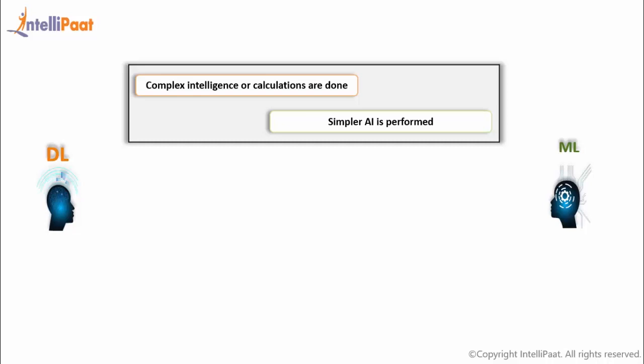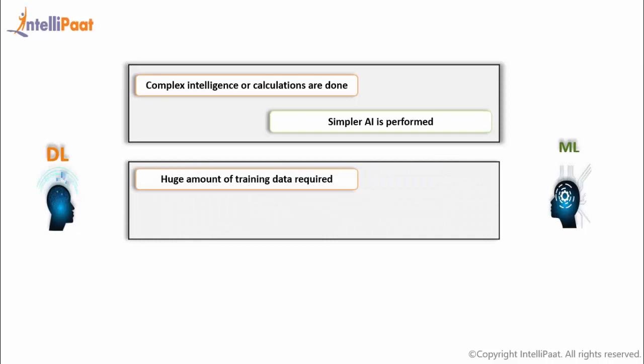Number two: the amount of data. Deep learning requires a huge amount of training data—really huge—to perform calculations, whereas machine learning requires relatively less amount of data.